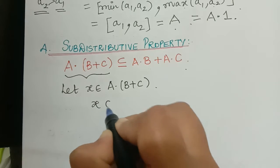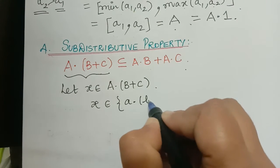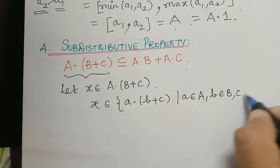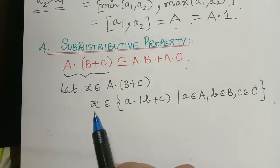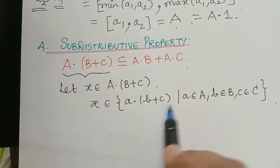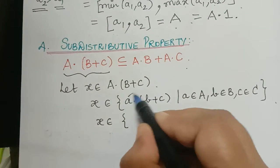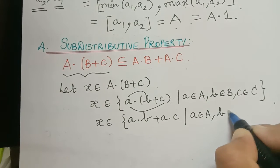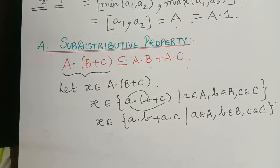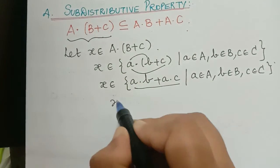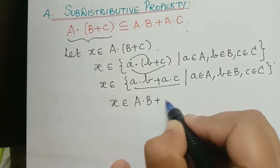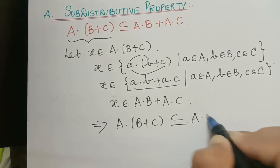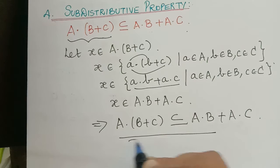If we assume this, x will be an element of a·(b+c), where a is an element of capital A, b is an element of capital B, and c is an element of capital C. This set can actually be written as x being an element of a·b + a·c such that a is an element of capital A and c is an element of capital C. Because this is an element of this, we can say x is an element of a·b + a·c. Therefore a·(b+c) is a subset of a·b + a·c. This is the sub-distributive property.